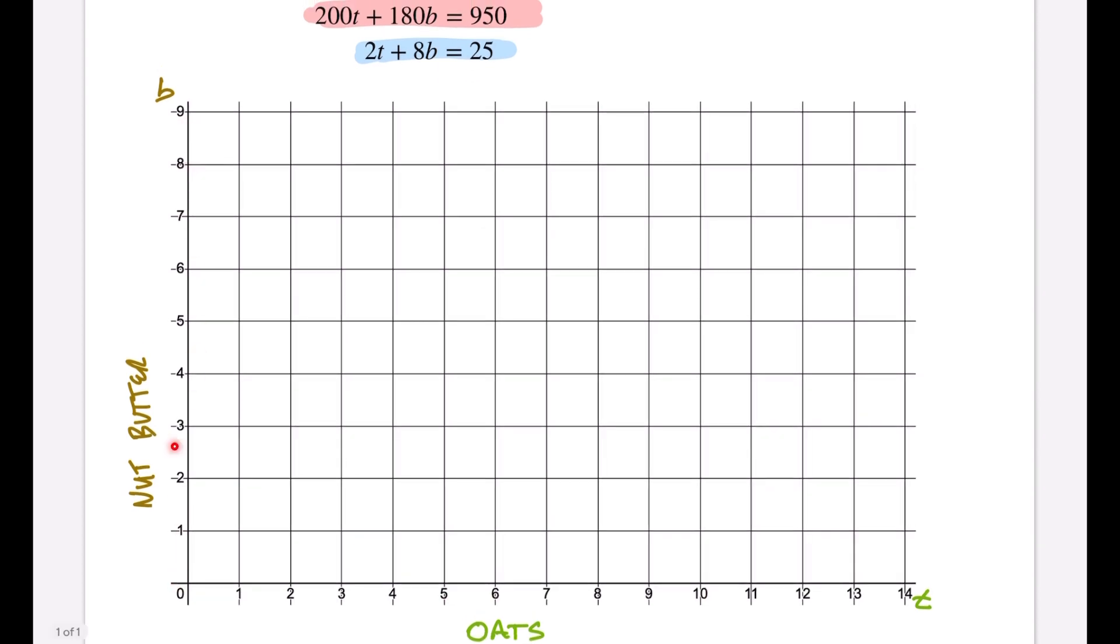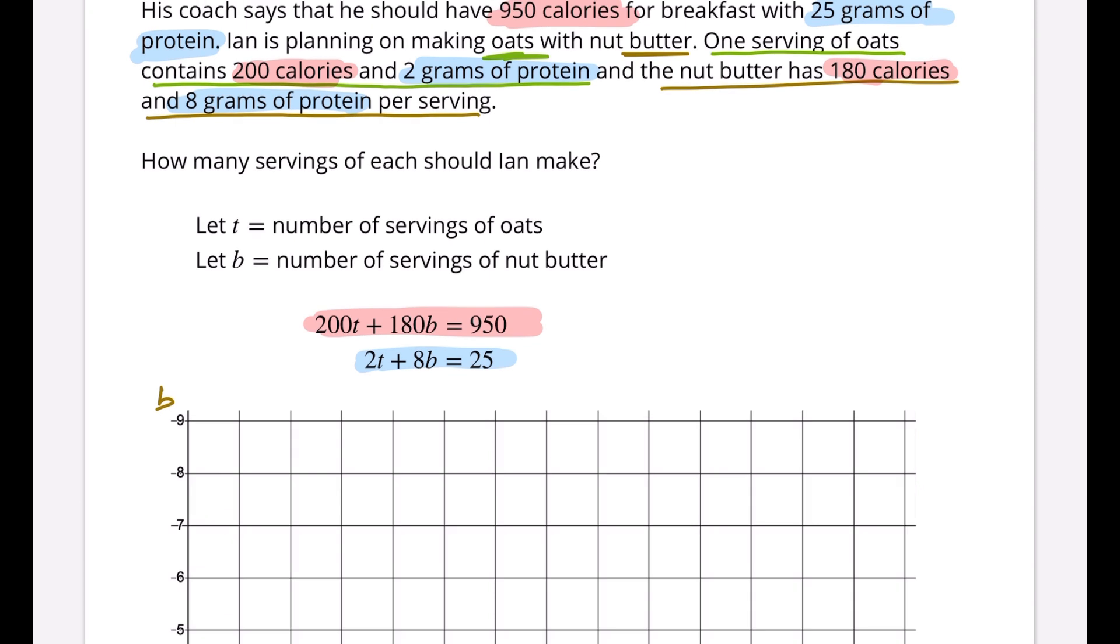We know that on any of these axes, one variable will have a zero value. At the b-axis, that means no oats, only nut butter. At the t-axis, no nut butter, only oats. So we're going to put zeros into this equation to find where we can draw lines. I'm going to need a little bit of space. Let's go up here.